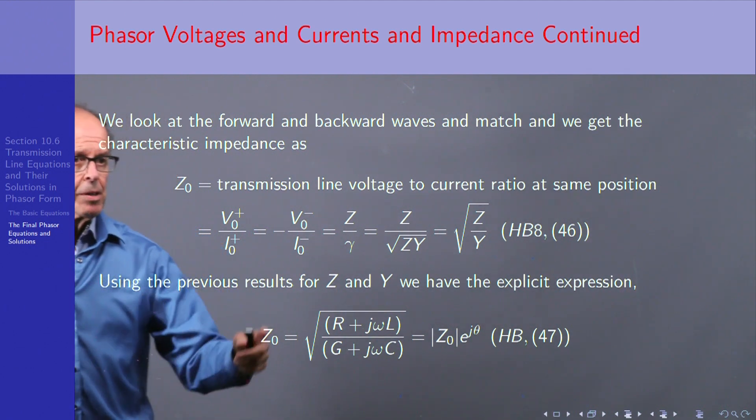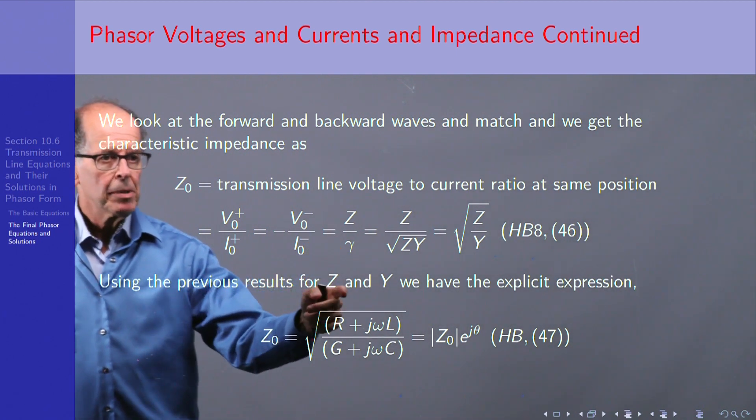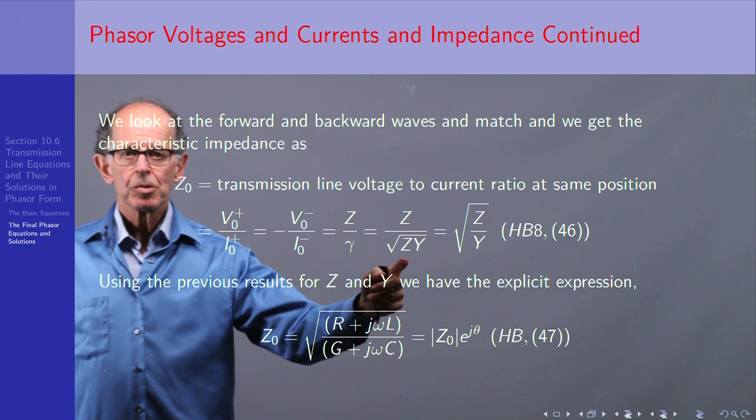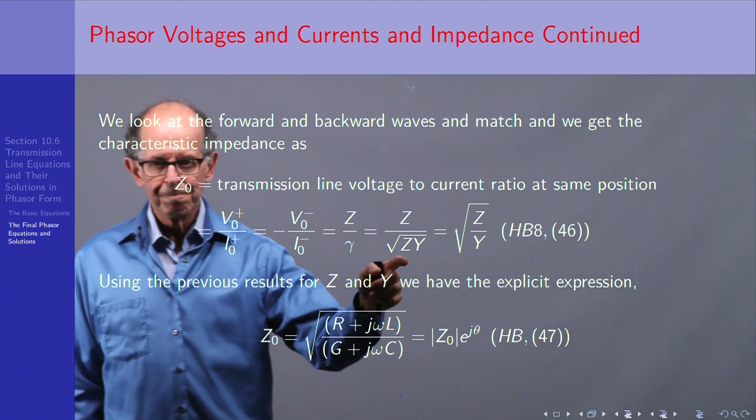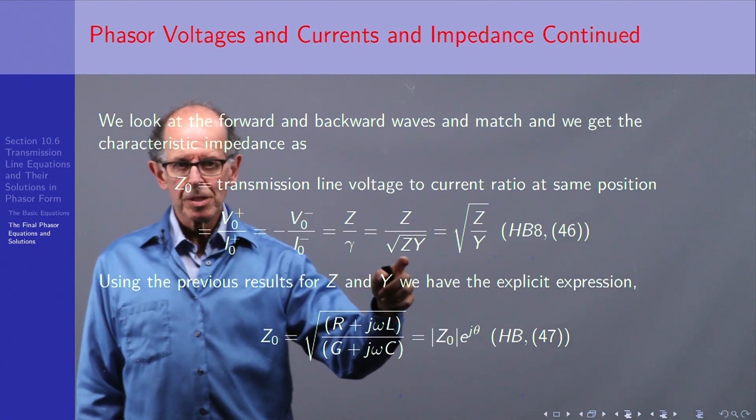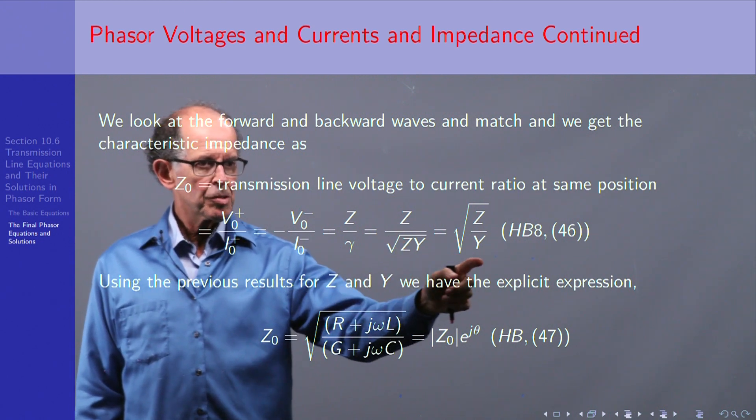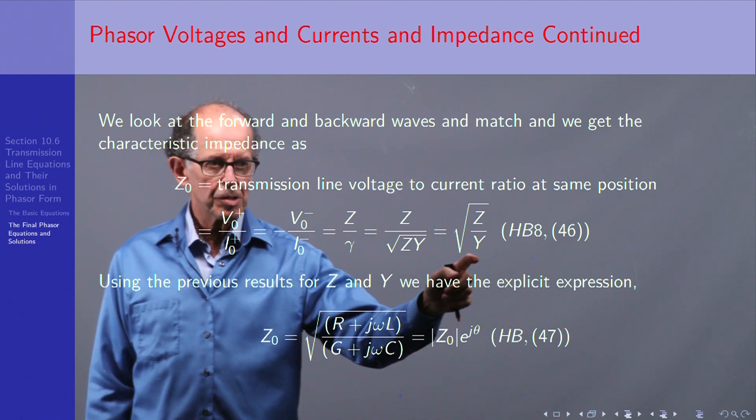So we have Z over γ, which we just showed, and then we substitute in γ as the square root of the impedance times the admittance per unit length, and one of the square roots of Z cancels out, and we get this classic result.